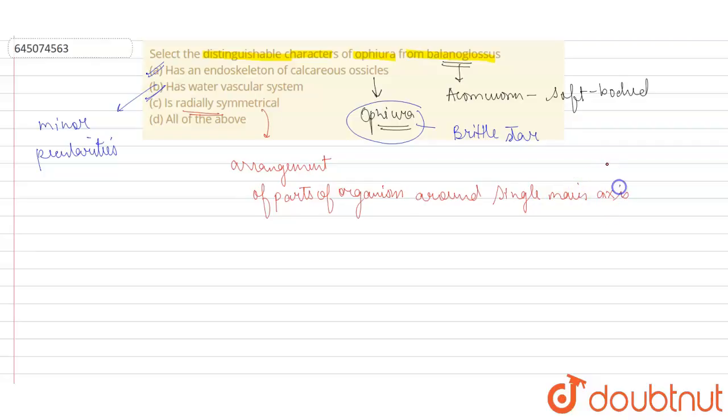Whereas Balanoglossus does not show this radial symmetry, it has different symmetry or bilateral symmetry we can say. So radial symmetry is a distinguishable character of Ophiura only, so option C is also correct. So all the three options, that is A, B, and C, are distinguishable characters of Ophiura from that of Balanoglossus. It means option D all of the above is the correct option.